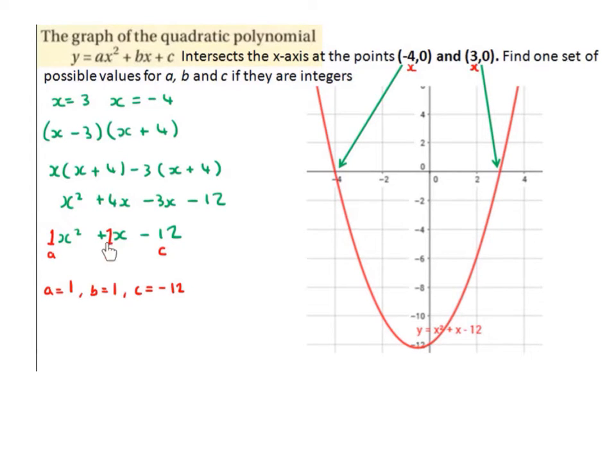So we can label them a, b, and c. So a is equal to 1, b is equal to 1, and c is equal to -12.